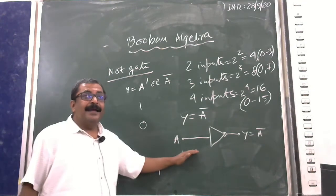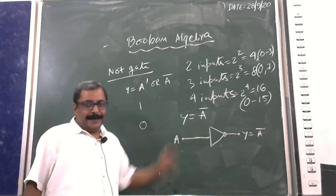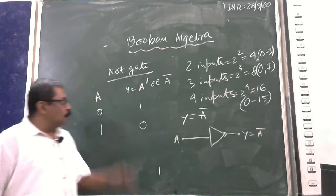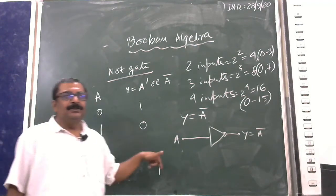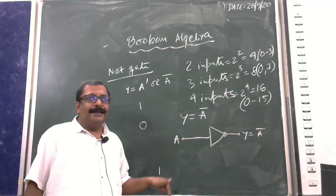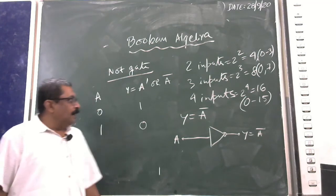The circuit diagram shows input A going into the NOT gate, giving output Y = A-bar. So the three basic gates discussed are: AND gate, OR gate, and NOT gate.